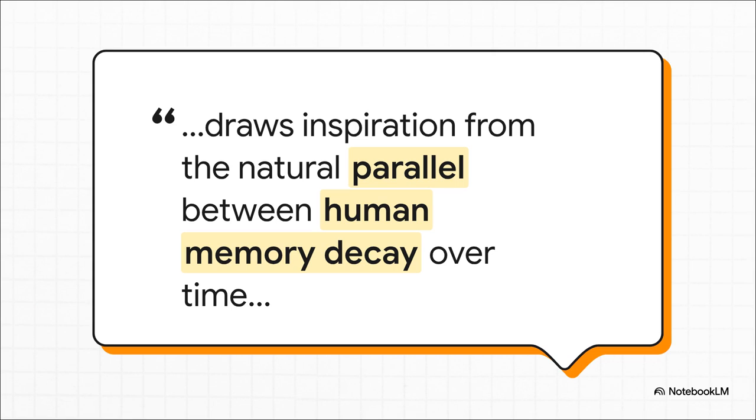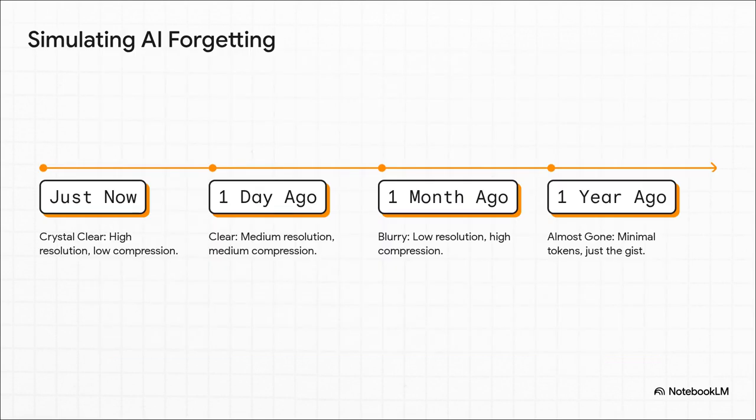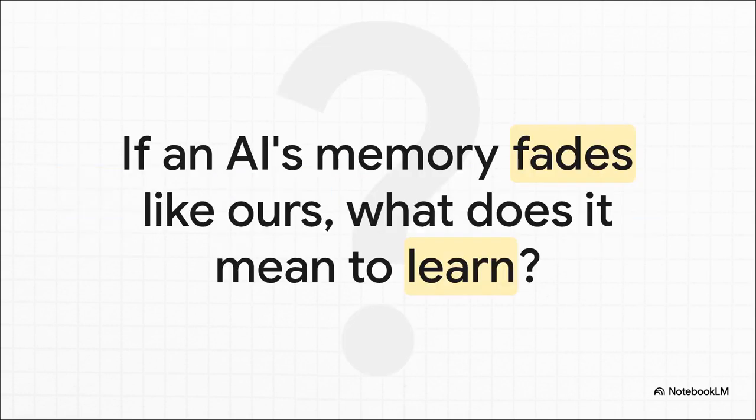I mean, think about it. Our memories aren't perfect video recordings. They fade. They compress over time. We remember the gist, not every single word. You can actually imagine an AI memory that works like this. Information from just a moment ago, it's crystal clear, high fidelity. But as time passes, the AI could apply more and more compression. The image of that memory would get blurrier and smaller, taking up fewer resources, just like our own memories fade from sharp detail into a general feeling.